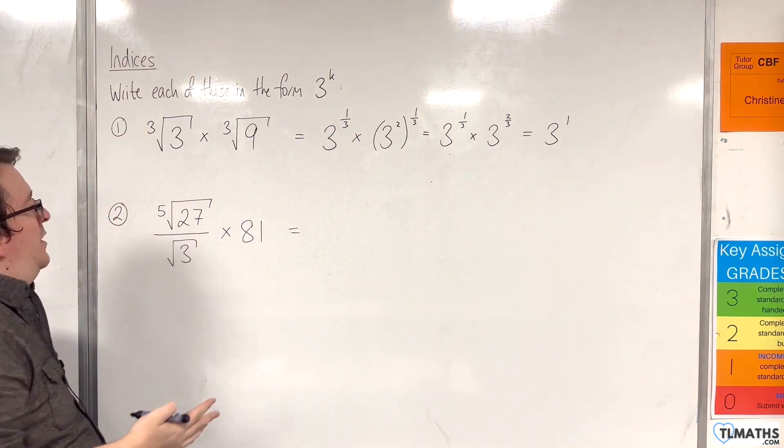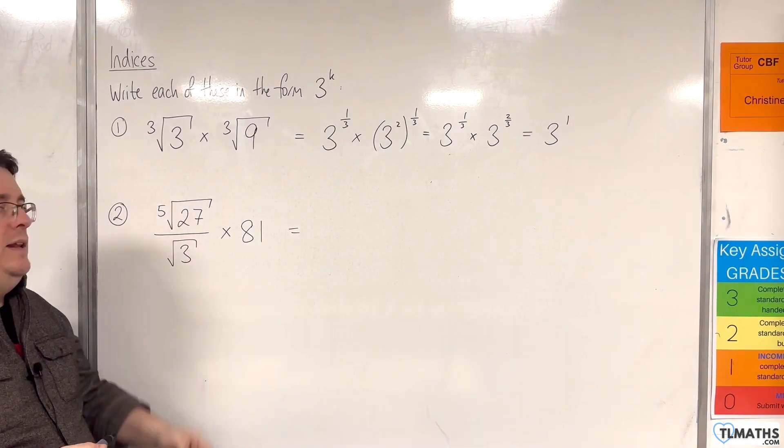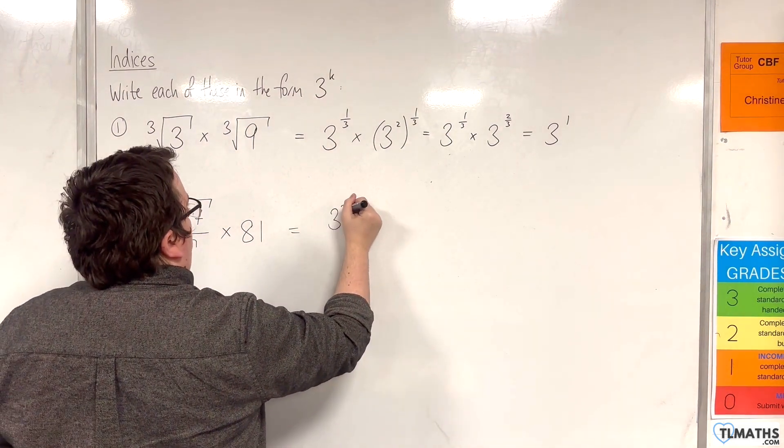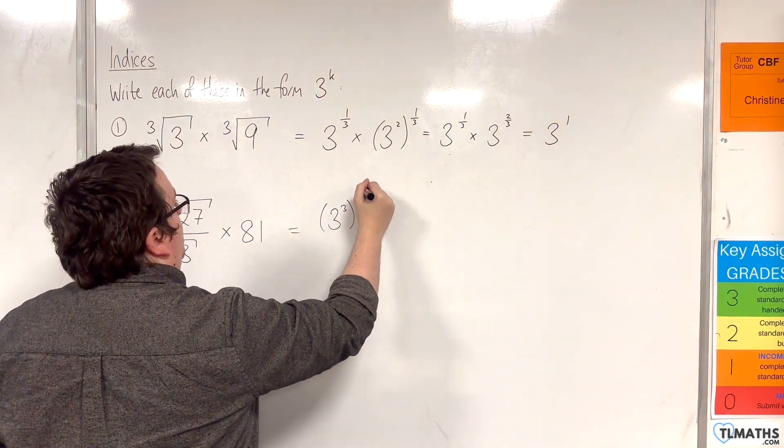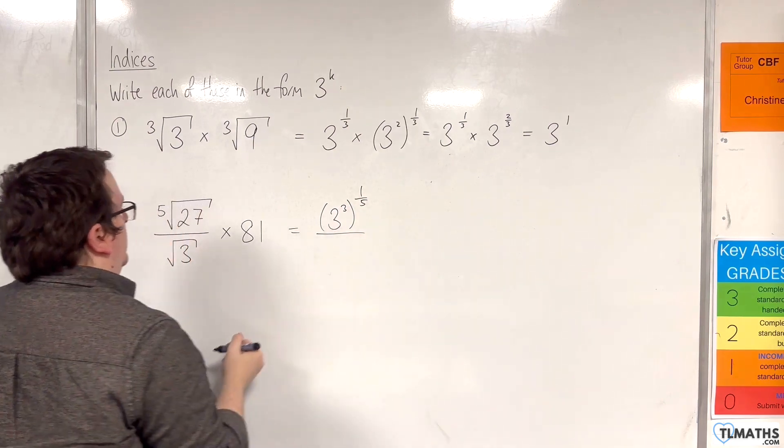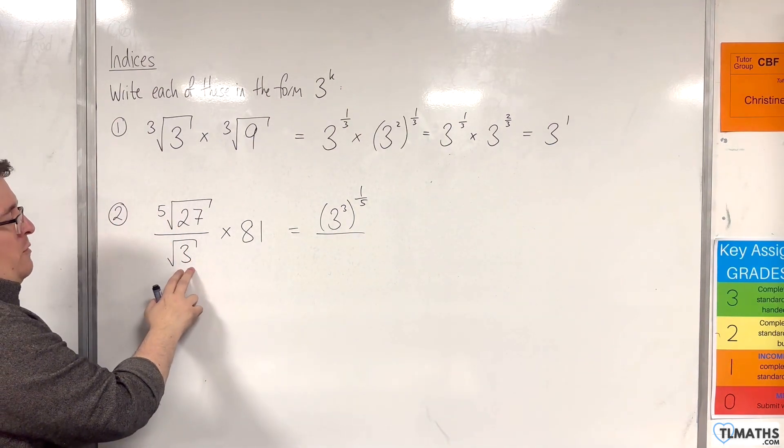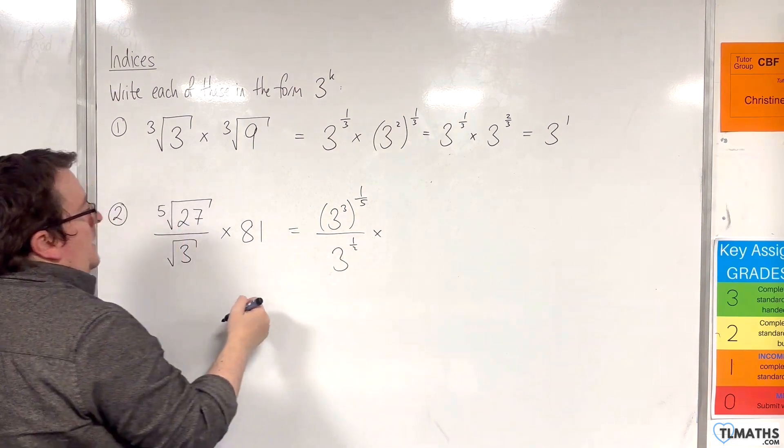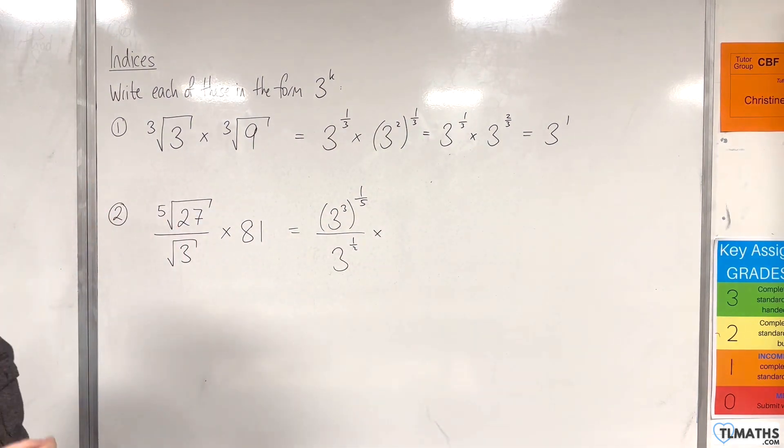Now, for the second example, we've got the 5th root of 27. Now, 27 is 3 cubed, so 3 cubed, and that's to the power of 1 fifth. Then we have the square root of 3, that's 3 to the power of 1 half. And then we've got 81, and that's 3 to the power of 4.